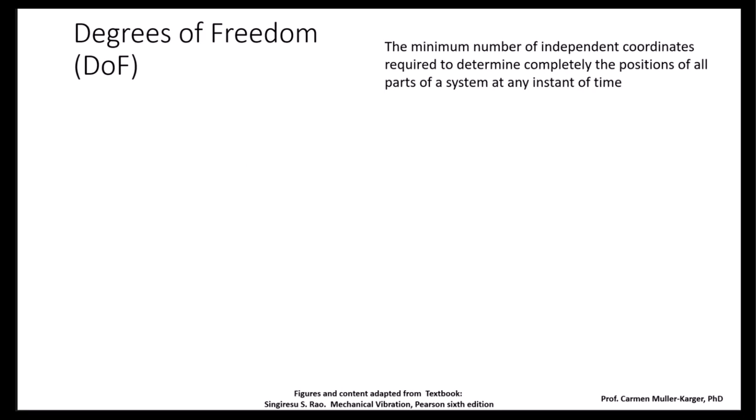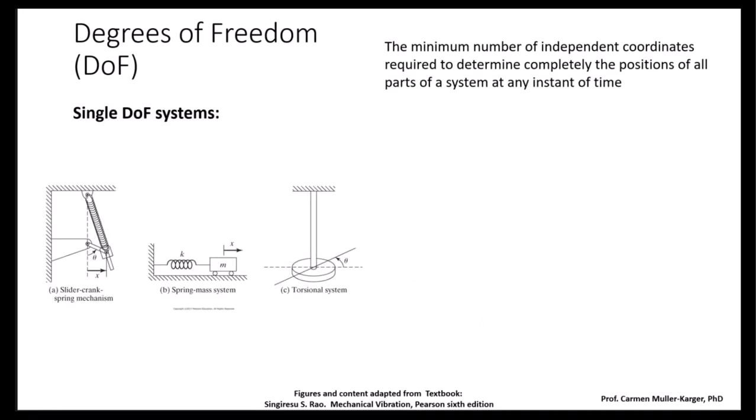The concept of degrees of freedom is very important. It represents the minimum number of independent coordinates required to determine completely the position of all parts of a system at any instant of time. We will have systems with only one degree of freedom, which are called single degree of freedom systems. Even though you have two variables, those two variables will be related to each other, so you need only a single variable to describe completely the position of all the parts of the system at all instants of time. In this case, we have x, which is the variable or parameter that describes the position of the system. When we have a torsional system, we usually use an angular displacement.